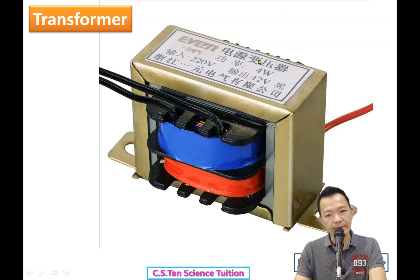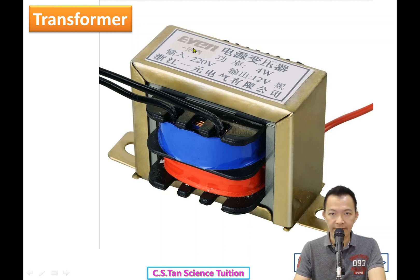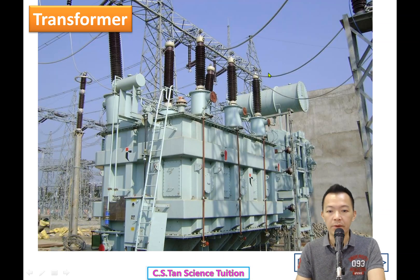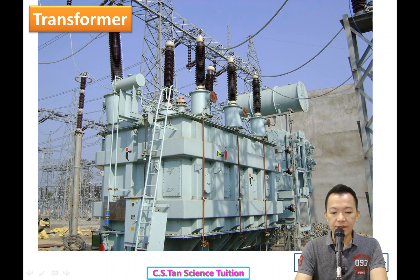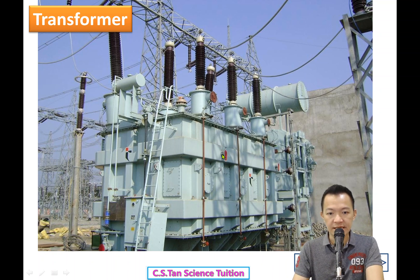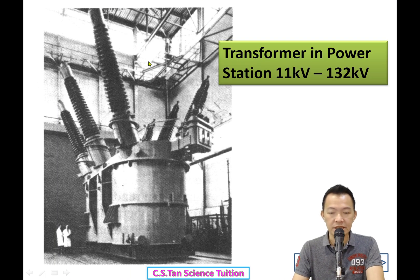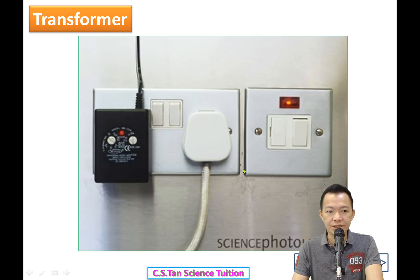A biàn yā qì — a transformer — can convert 220 or 240 volts from Malaysia down to 12 volts. You see transformers on the roadside; those big ones are large-scale transformers. You also find them in power stations.